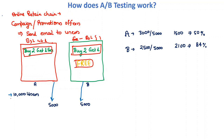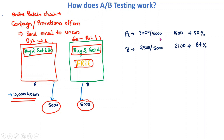Let's say there are 10,000 registered users on your website. You send email A to 5,000 users and email B to 5,000 users. After that, you analyze the results: out of 5,000 users who received email A, 3,000 read the mail, and out of those 3,000, only 1,500 landed on that particular website using that email. This means the conversion rate is 50 percent — 1,500 divided by 3,000.